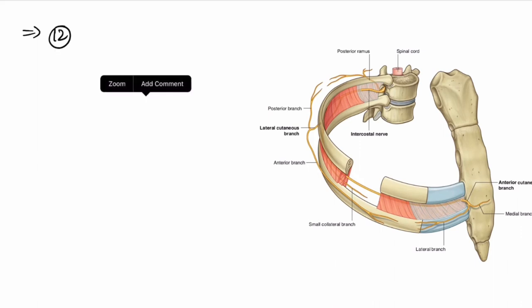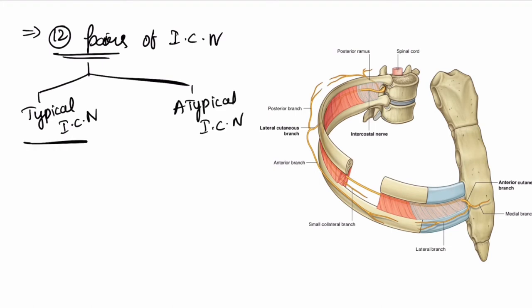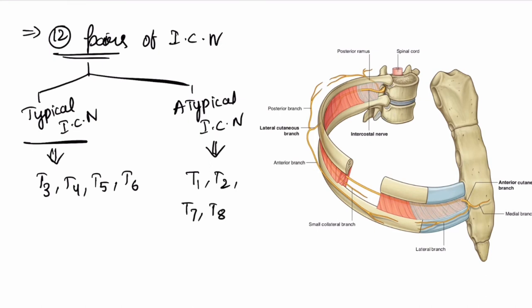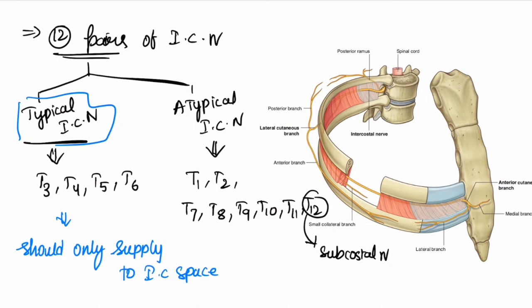We have 12 pairs of intercostal nerves. These 12 pairs are divided into two types: typical intercostal nerves and atypical intercostal nerves. Typical intercostal nerves are T3, T4, T5, and T6. The remaining are atypical: T1, T2, T7, T8, T9, T10, T11, and T12 — T12 is the subcostal nerve. Typical nerves are called typical because they supply only to the intercostal space and not to any other organs.